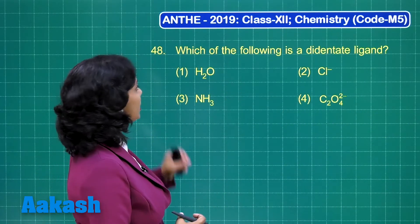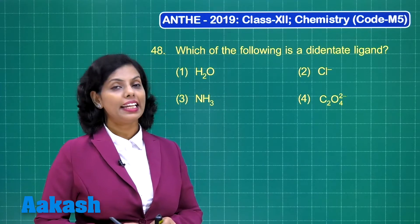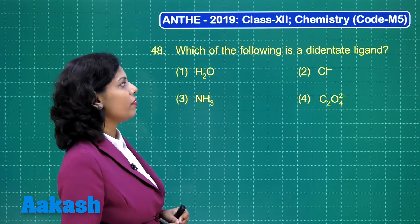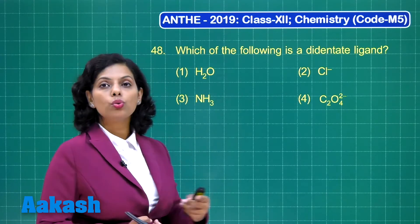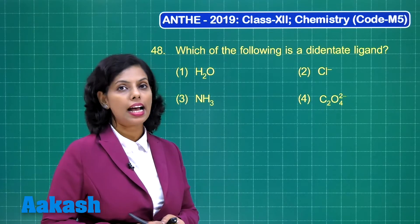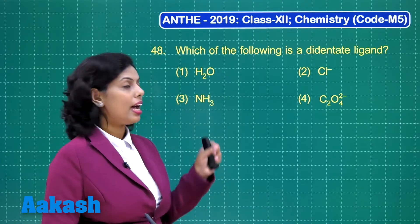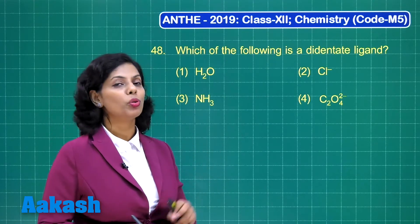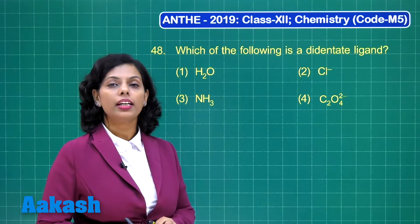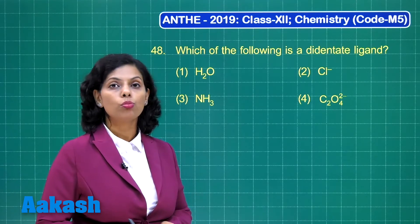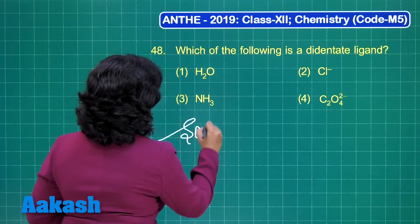Question number 48: which of the following is a didentate ligand? This question is from coordination chemistry. A ligand with two donor atoms is considered a didentate ligand. Water has oxygen with a lone pair but is monodentate. Chloride ion is monodentate. Ammonia, where the nitrogen atom has a lone pair, is also monodentate.